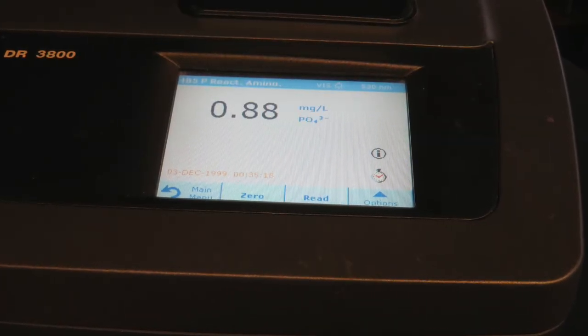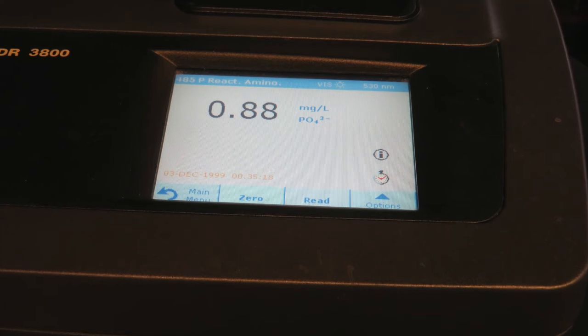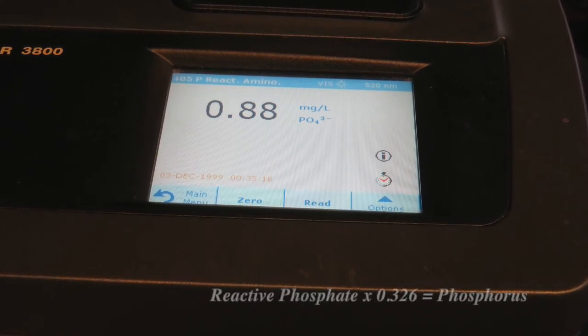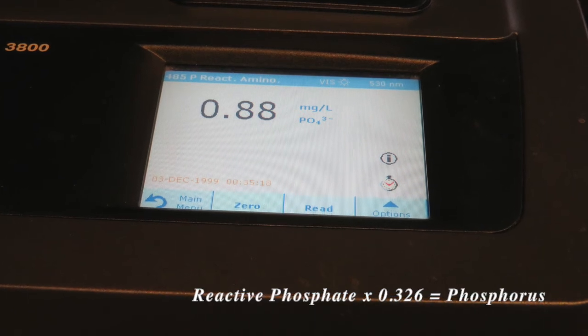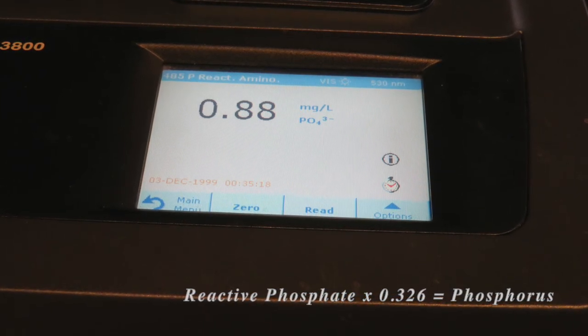The reading is 0.88 milligrams per liter. You can multiply this result by 0.326 to obtain milligrams per liter of phosphorus.